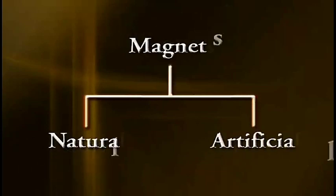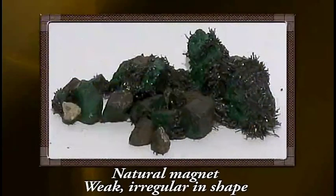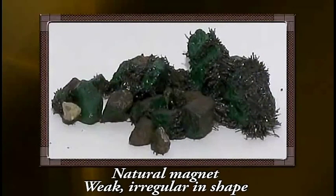Magnets are of two different kinds: Natural Magnets and Artificial Magnets. The natural magnets possess the ore magnetite in them. They are weak and often irregular in shape.